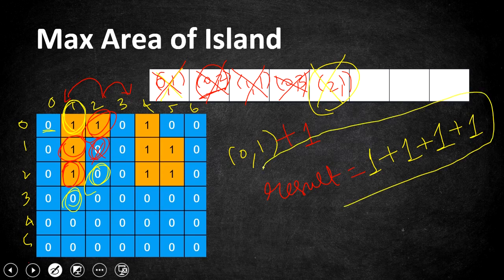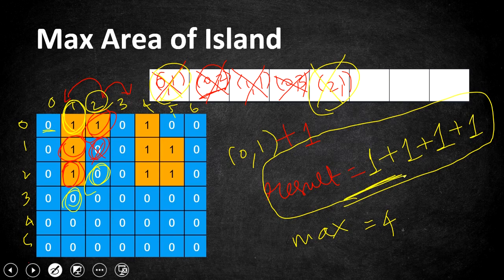The queue is empty for this island and it has formed an area of 4. We return that to the main method, which keeps a max variable to hold the maximum area so far — currently 4. To avoid revisiting cells, every time we encounter a 1 and count it, we change it to 0. This marks the cell as already visited so we don't process it again in future iterations.